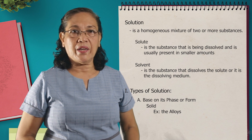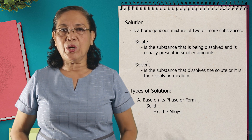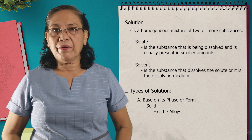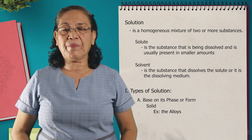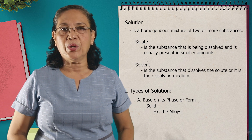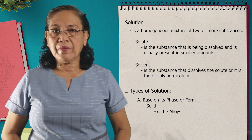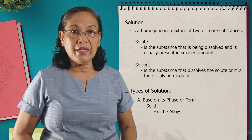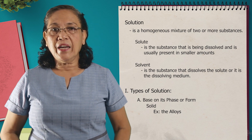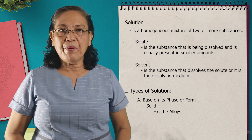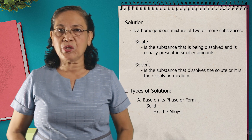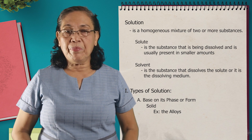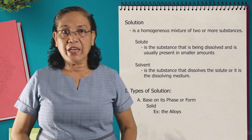Now, what is an alloy? An alloy is a mixture of two or more different kinds of metals. In the alloy, like bronze, this is a combination of copper and tin. Where can you see bronze? Bronze is what we are using for electrical wiring. Another is the brass. Now, the brass is a combination of copper and zinc. Where can you see the brass? It is used in musical instruments.